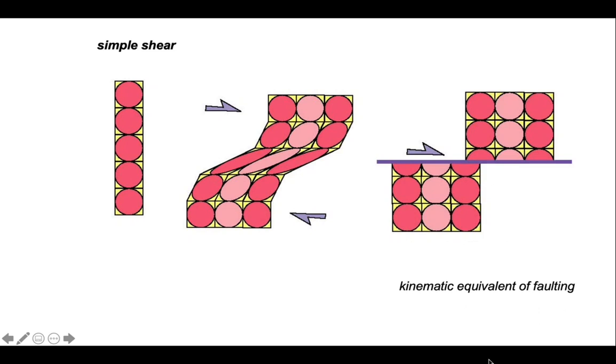For faulting, the strain is localised and discontinuous in the shear zone. The strain is distributed through the shear zone and is continuous. There's no break in it.